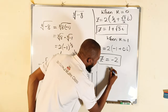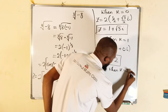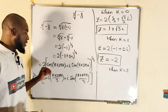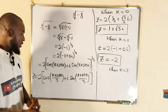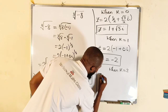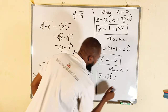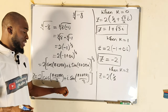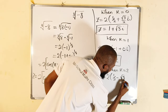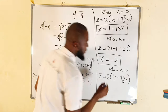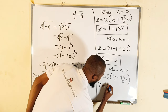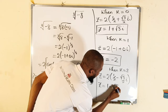When k = 2: we have 2 × 2π + π = 5π, divided by 3 gives 5π/3. cosine(5π/3) = 1/2 and sine(5π/3) = −√3/2. So z = 2 × (1/2 − i·√3/2) = 1 − √3i. This is the third solution.